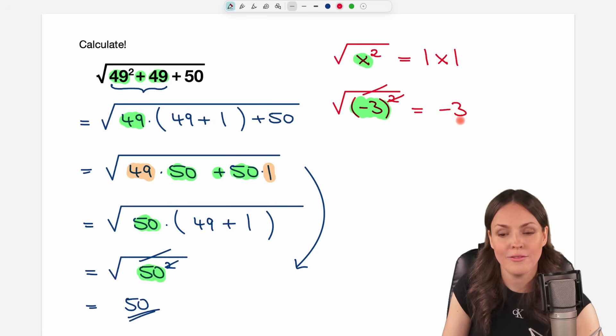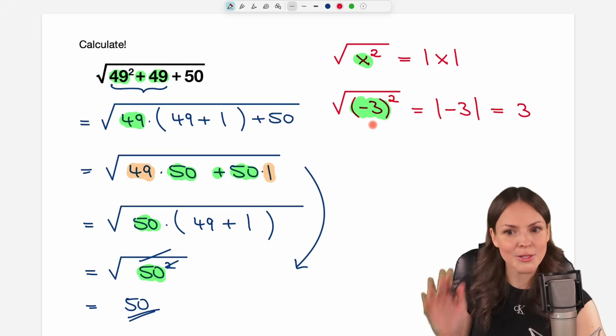So just canceling out is not a thing. We have to take the absolute value of this number here, of the negative three, and the absolute value makes everything positive. So even if you have a negative number in here, the absolute value says the result is going to be positive, so positive three. So be cautious when you just cancel things out. That is only possible if you know what you're doing or if the numbers are positive, then everything is good. But with negative numbers, we have to take the absolute value.